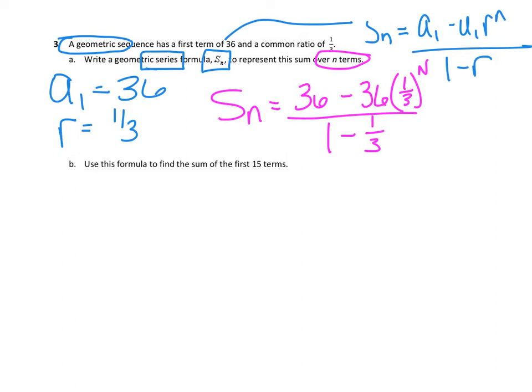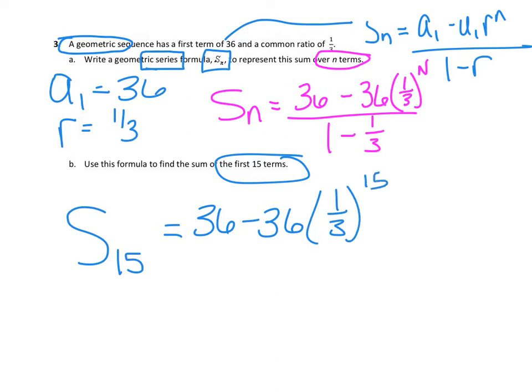Part B says, use this formula to find the sum of the first 15 terms. So now in place of that n, I'm putting in 15. So 36 minus 36 times 1/3 to the 15th, all over 1 minus 1/3. You could write out 15 terms, keep taking 36 and multiplying by a third, write them all out and add them together. But this formula is supposed to be a quicker method for you to get those 15 terms. I'm just using alpha Y equals and carefully typing this in my calculator. If you have that old 83 without the alpha Y equals, I highly suggest you type the top in, hit enter, write it down, type the bottom in, hit enter, write it down, and then divide those two. I'm getting 53.999624 at the end there.